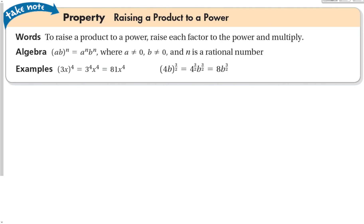This leads us to the product to a power property: to raise a product to a power, raise each factor to the power n and multiply. So (a times b) to the n becomes a to the n times b to the n, as long as a and b are not 0 and n is rational. For example, (3x)to the 4th turns into 81x to the 4th. And (4b) to the 3-over-2 turns into 8b to the 3-over-2, since 4 to the 3-over-2 equals 2 cubed equals 8.